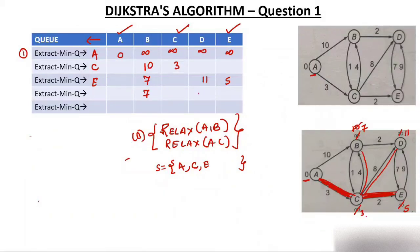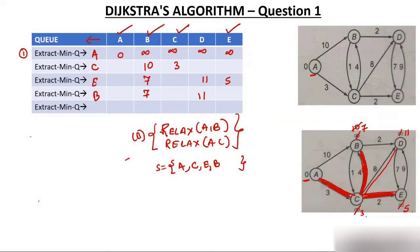Extract minimum again — minimum is 7, which is node B. Extract B from Q, leaving only node D. Add B to S and make the edge dark. Adjacent of B: C is already extracted. D is adjacent to B — relax: 7+2=9, and D is currently 11. Since 9 is less than 11, D becomes 9. B tells C that it has given a new path to D, so the double line from C to D is removed and replaced with B to D.